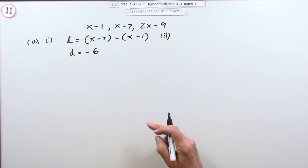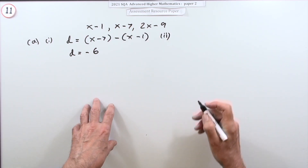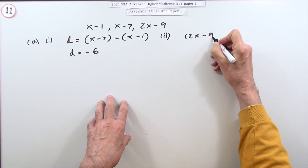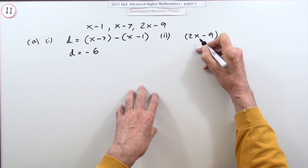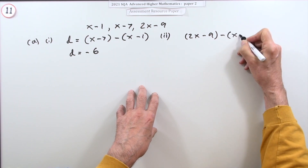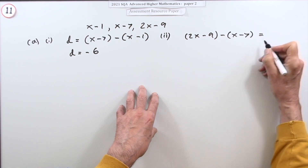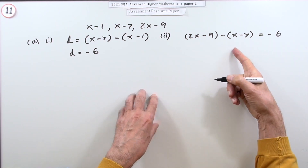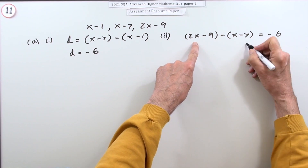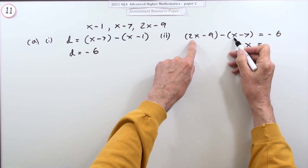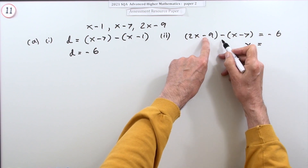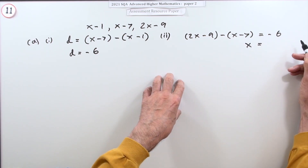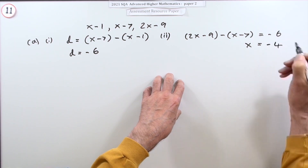For part 2, hence find the value of x. You use the next pair of consecutive terms. Subtracting the preceding from the following, the difference should also be negative 6. This time when you subtract them you'll end up with an x: 2x minus x gives x, and negative 9 plus 7 gives negative 2. So x minus (negative 2) equals negative 6, giving x equals negative 4.